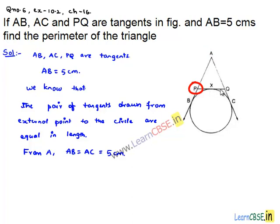From Q, QX and QC are two tangents to the circle; those lengths will also be equal. From P: PX equals PB. From Q: QX equals QC. Let these be equations 1 and 2.